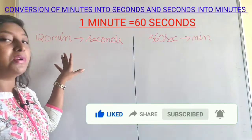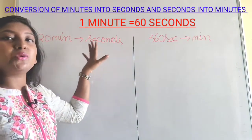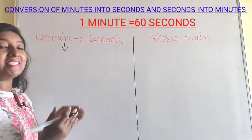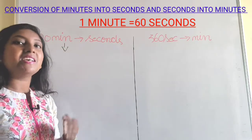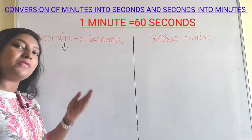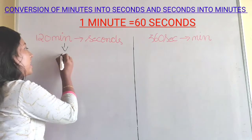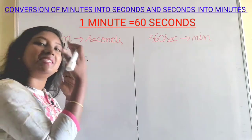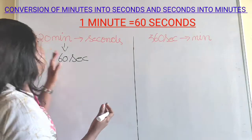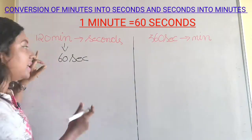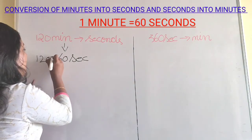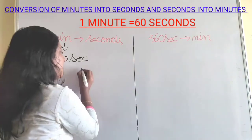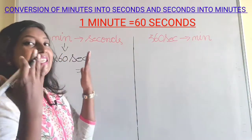In order to convert minutes into seconds, in the place of minutes we are going to substitute 60 seconds. Since 1 minute equals 60 seconds, we take 60 seconds and multiply it by 120. So it's 120 into 60 — simply multiply this to get your answer in seconds.